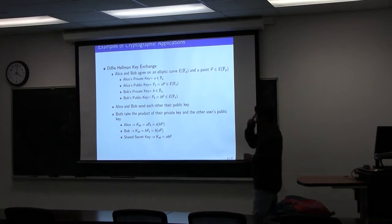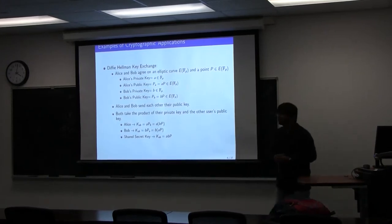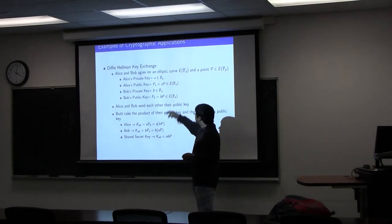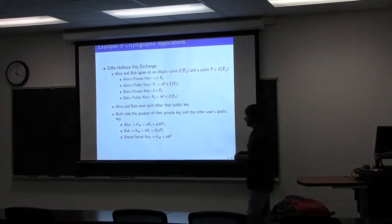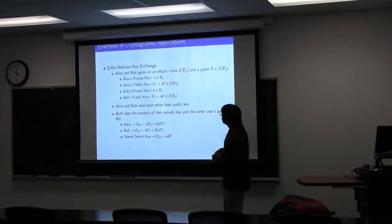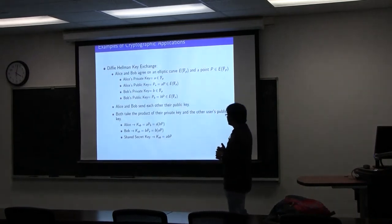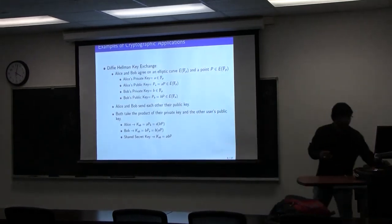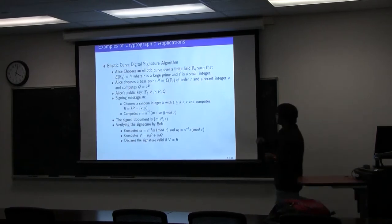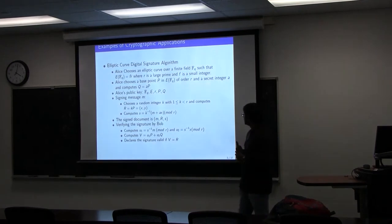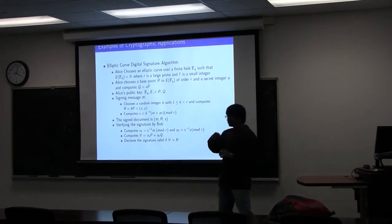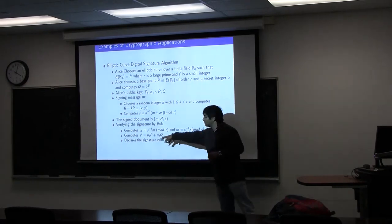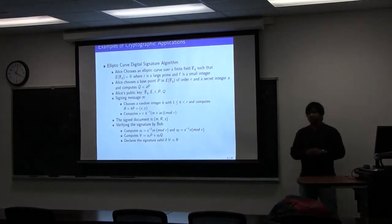Some examples: if we look at Diffie-Hellman key exchange, both Bob and Alice use elliptic curve scalar multiplication when creating their public keys. Another application is the elliptic curve digital signature algorithm (ECDSA), where at the verification step we do not only use a single scalar multiplication — we do multi-scalar multiplication: u1·P + u2·Q, where P and Q are two different points of an elliptic curve.